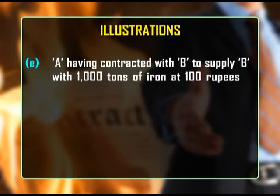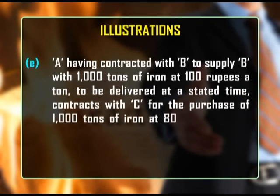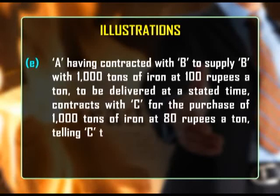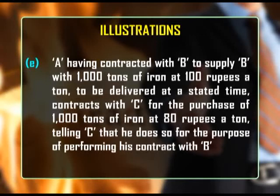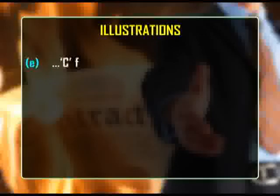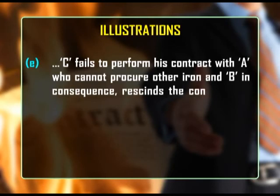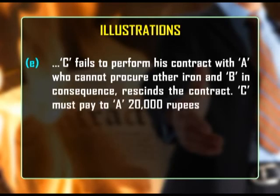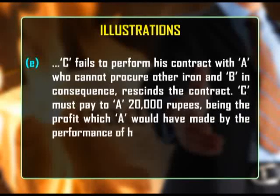Another illustration: A, having contracted with B to supply B with 1,000 tons of iron at 100 rupees a ton to be delivered at a stated time, contracts with C for the purchase of 1,000 tons of iron at 80 rupees a ton, telling C that he does so for the purpose of performing his contract with B. C fails to perform his contract with A, who cannot procure other iron, and B in consequence rescinds the contract. C must pay A 20,000 rupees, being the profit which A would have made by the performance of his contract with B.